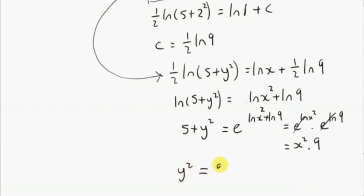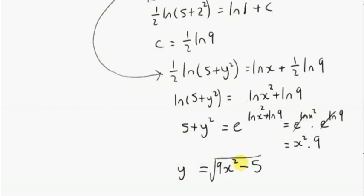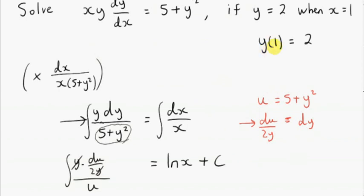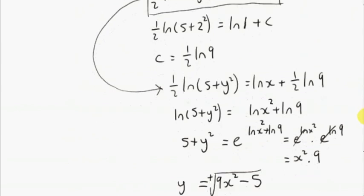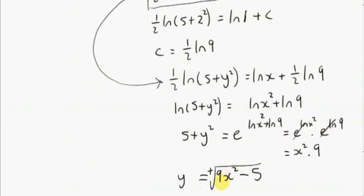So we can write this as y squared equals 9x squared minus 5. From that we take the square root. This is the positive square root because when x is 1, y is 2. If x is 1, we have 9 times 1 squared, which is 9. 9 minus 5 is 4 — the square root of 4 is 2, so we take the positive square root to get 2. When x is 1, we want y to be 2, so it must be the positive square root that we're taking.